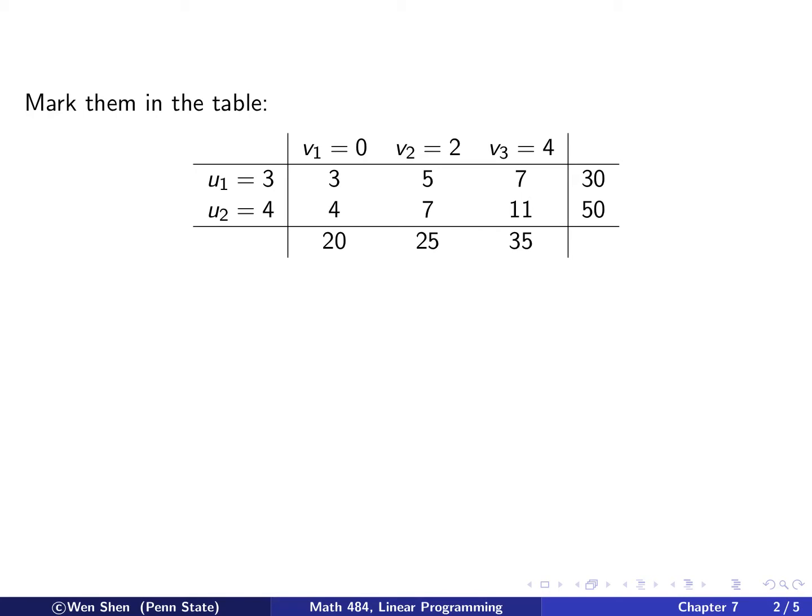We are now marking these values in the table. So v1 is 0, v2 is 2, v3 is 4, and u1 and u2 are the same. With this marking, we know that the constraint ui plus vj less than cij is always satisfied.